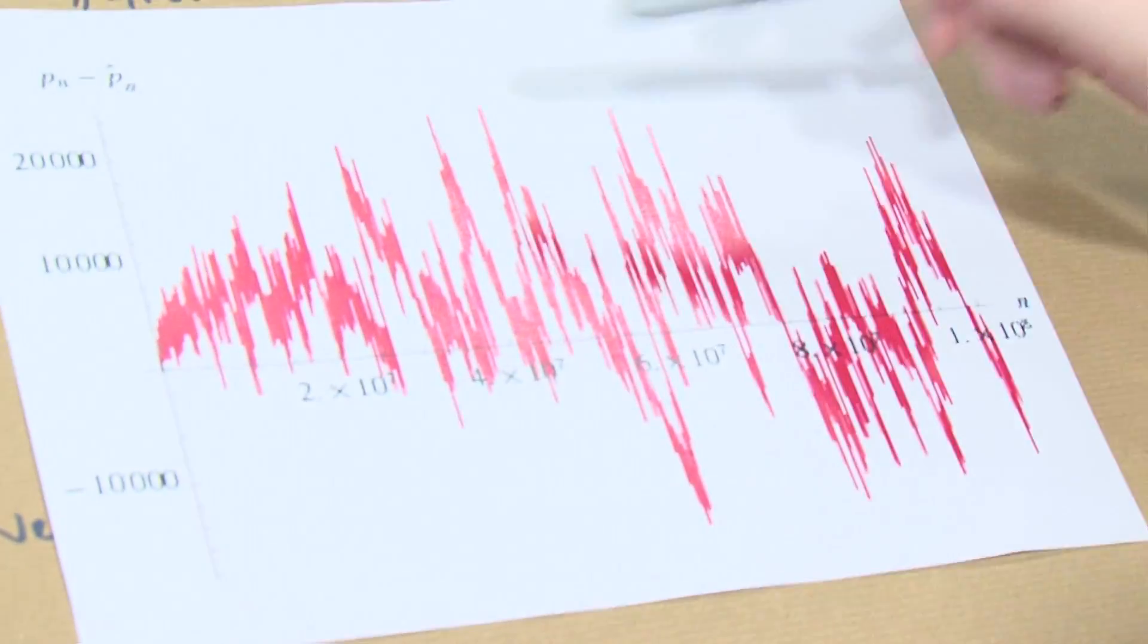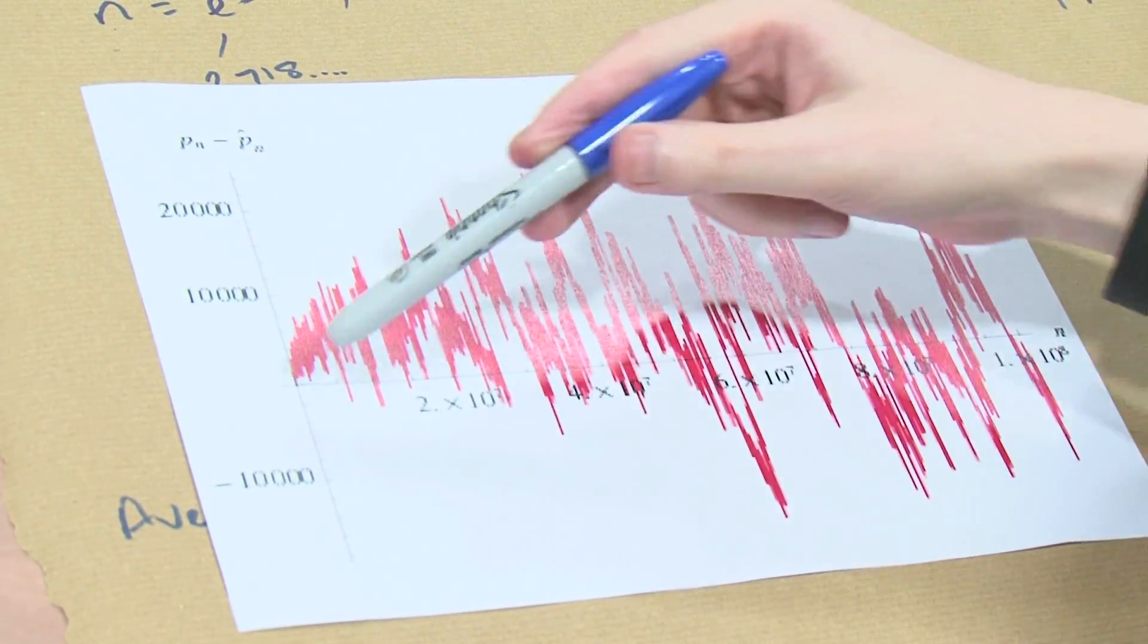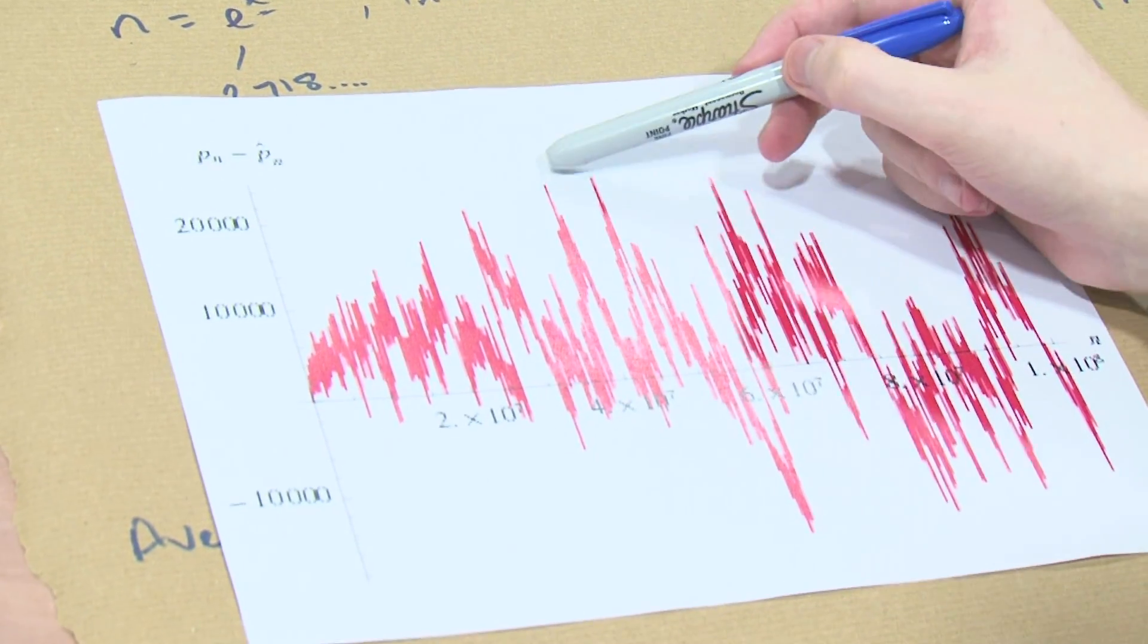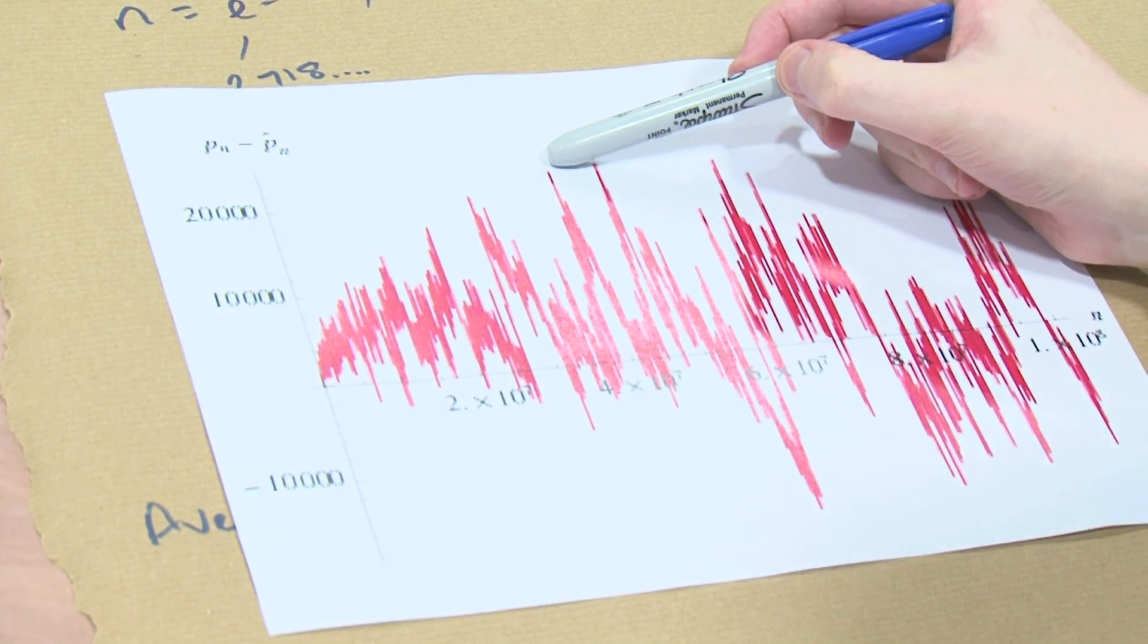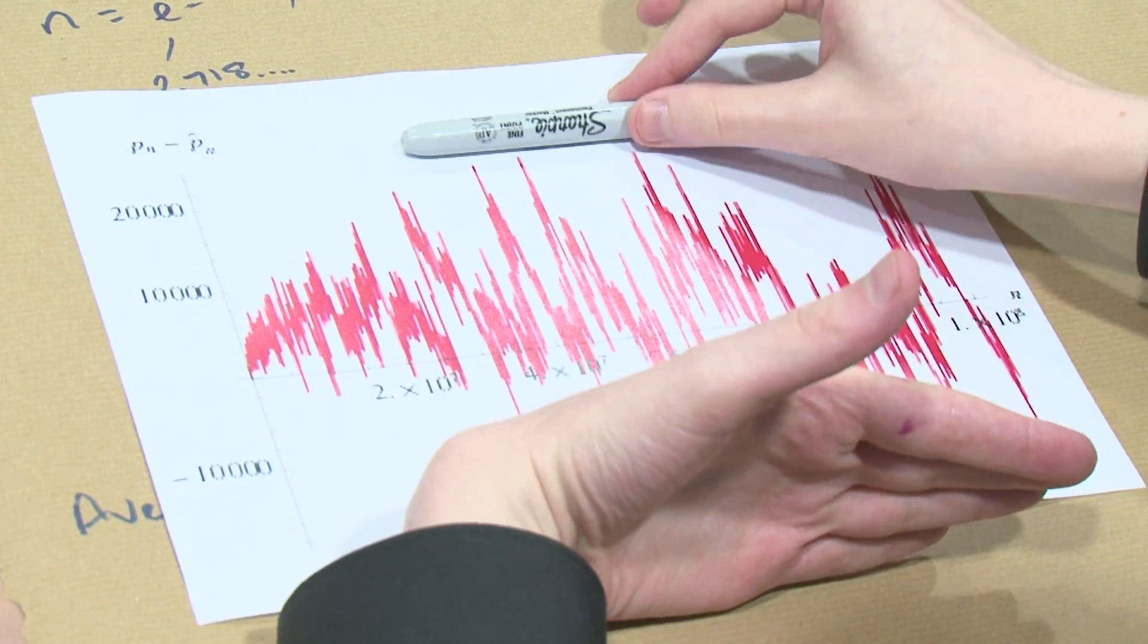And so you can see that the error is sort of zigzagging around 0-ish. So it's a bit off here. It's quite far away, but then it comes back again. It zigzags around. It's within this much.